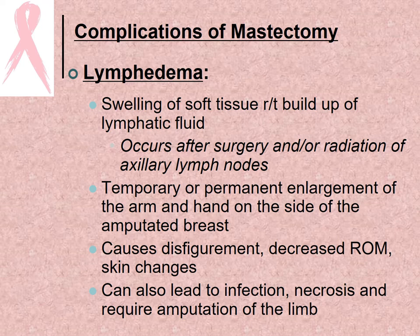Lymphedema is swelling of soft tissue related to the buildup of lymphatic fluid. It occurs after surgery and/or radiation of the axillary lymph nodes, causing temporary or permanent enlargement of the arm and hand on the side of the affected breast. It causes disfigurement, decreased range of motion, skin changes, and can lead to infection, necrosis, and even require amputation of the limb — which is why we do not take blood pressures or perform needle sticks on the affected side.